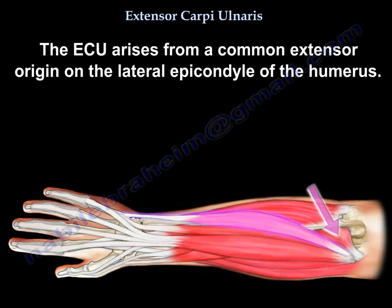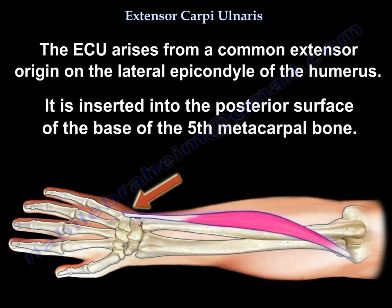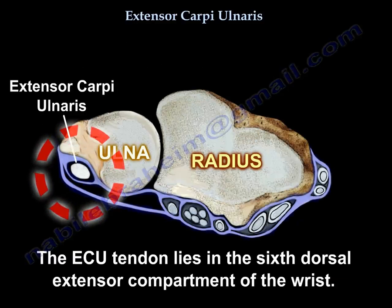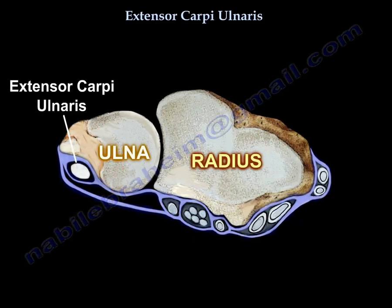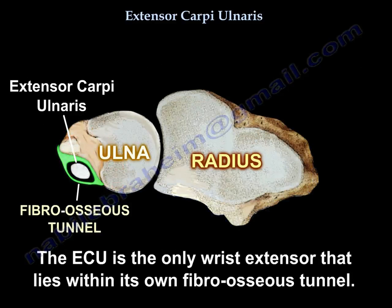The extensor carpi ulnaris arises from a common extensor origin on the lateral epicondyle of the humerus. It is inserted into the posterior surface of the base of the fifth metacarpal bone. The tendon lies in the sixth dorsal extensor compartment of the wrist. The extensor carpi ulnaris tendon has its own fibroosseous tunnel near the wrist — it is the only wrist extensor that lies in its own fibroosseous tunnel.